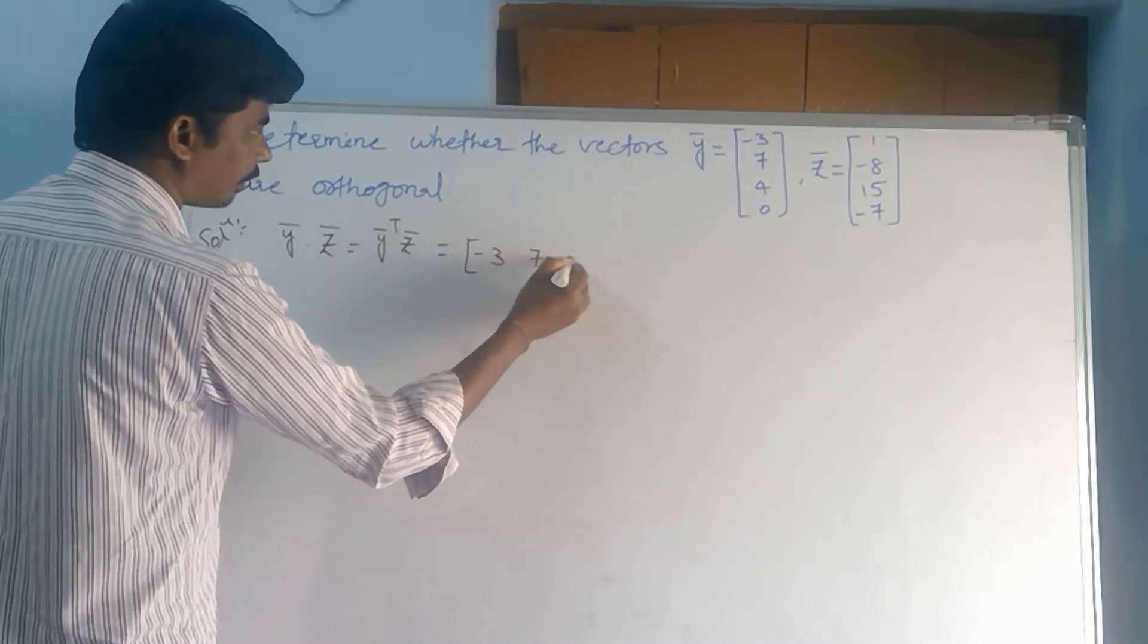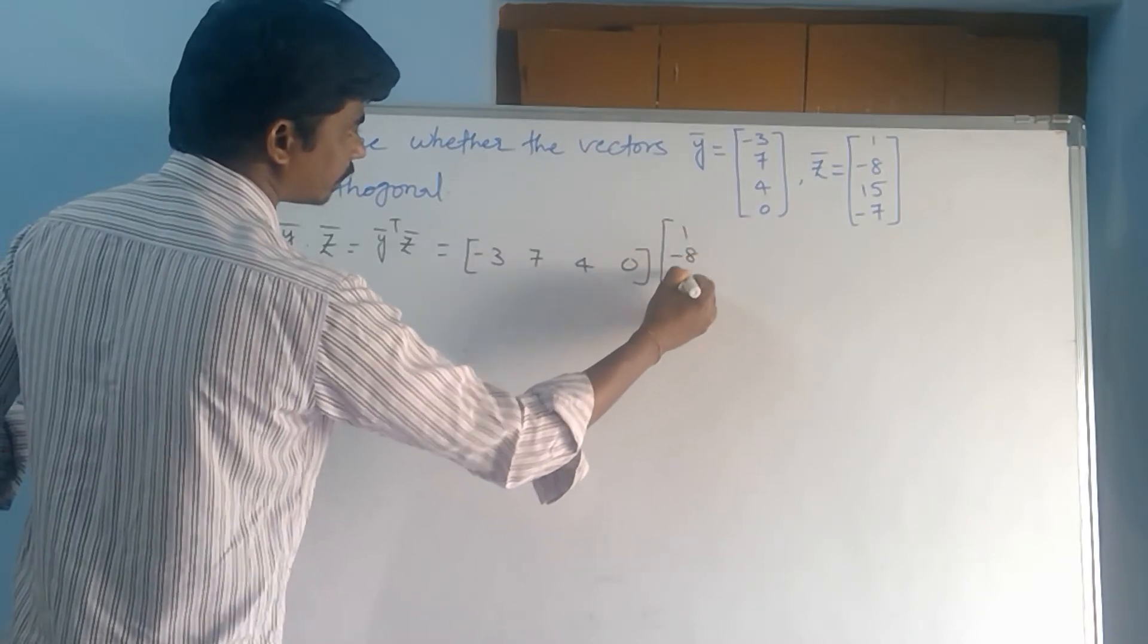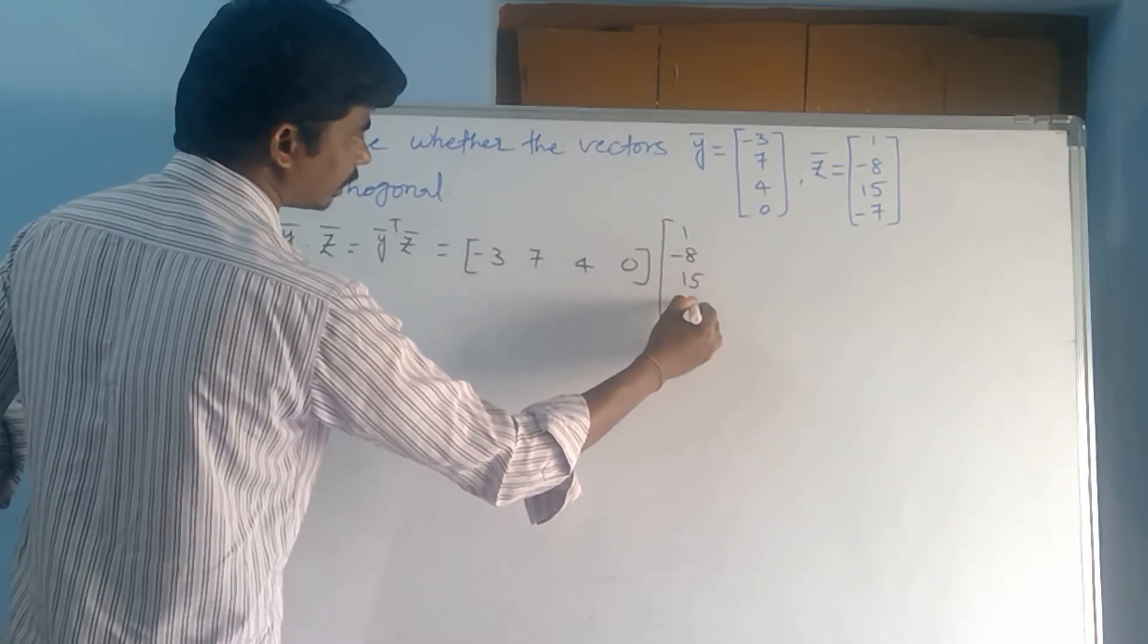Minus 3, 7, 4, 0, this one. z bar: 1, minus 8, 15, minus 7.